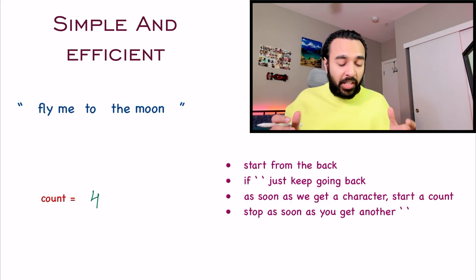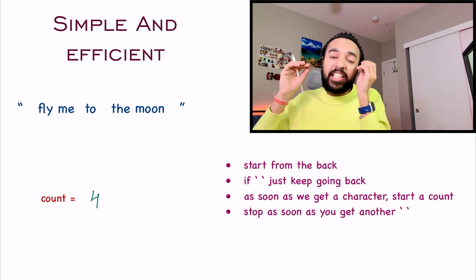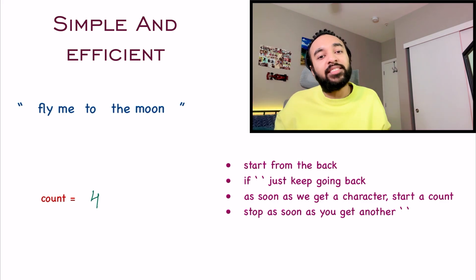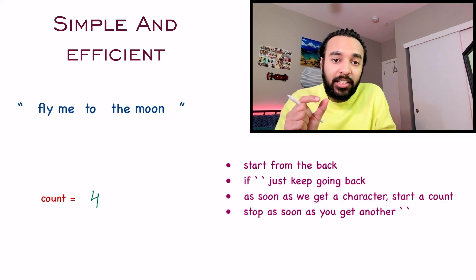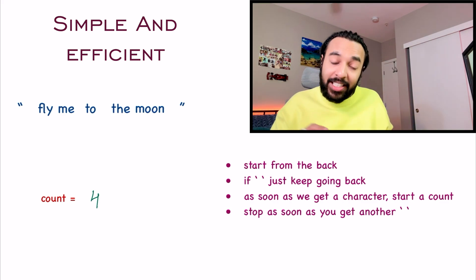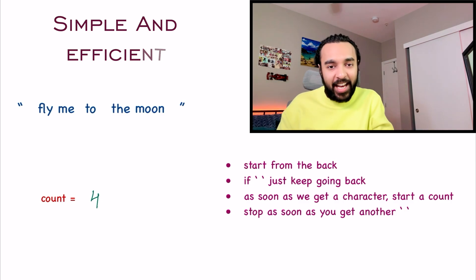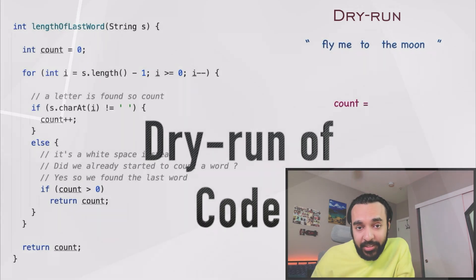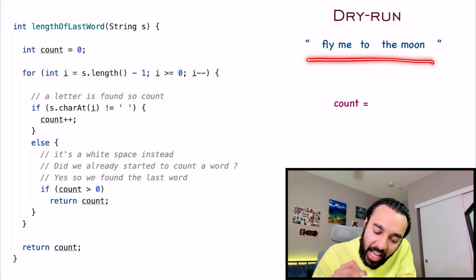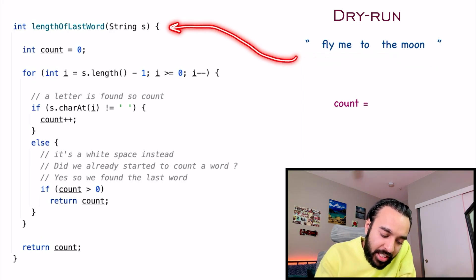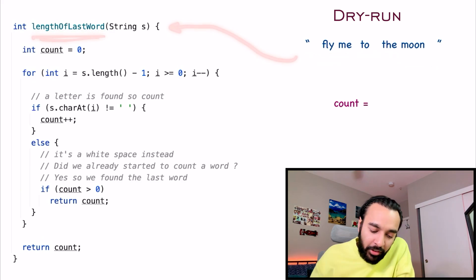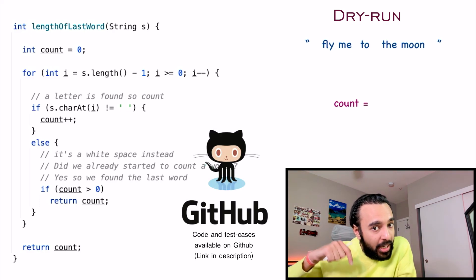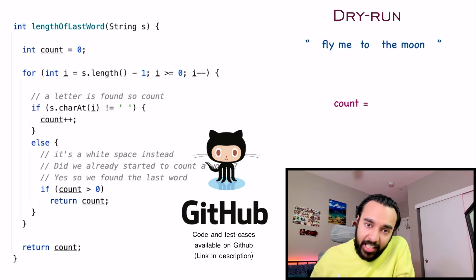So you see what we did? We did not have to take the help of any additional data structure. We did not even have to store the string — we just have to return the length. Based upon this, let us quickly do a dry run of the code and see how it works in action. On the left side of your screen, you have the actual code to implement this solution. And on the right, I have the sample string that is passed as an input parameter to the function "lengthOfLastWord". By the way, this complete code and its test cases are also available in my GitHub profile — you can find the link in the description below.